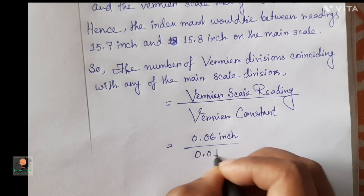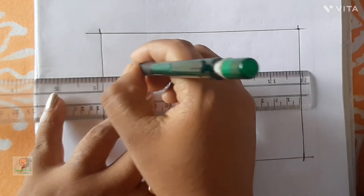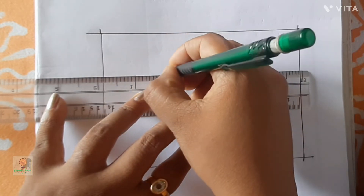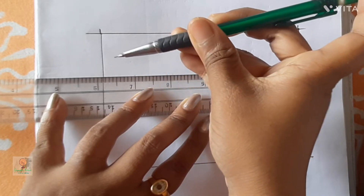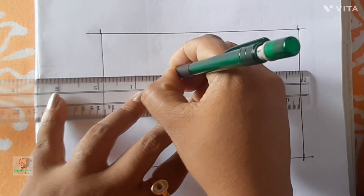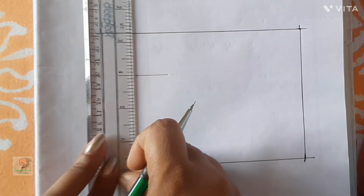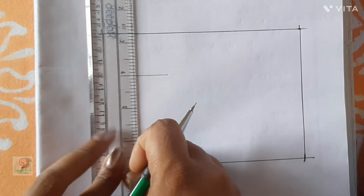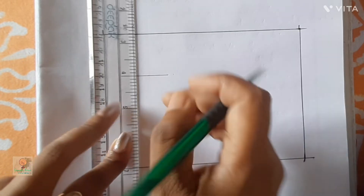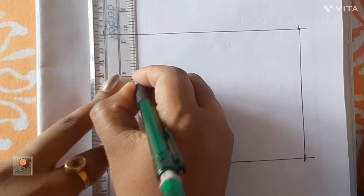Now we go to completing our drawing, which is the main part of the Vernier scale. The Vernier scale calculation is very easy — just division to get the Vernier constant, and then we draw it. According to our mathematics, 9 small main scale divisions are equal to 10 Vernier scale divisions. First we have to draw it by taking 0.9 inch on the scale.